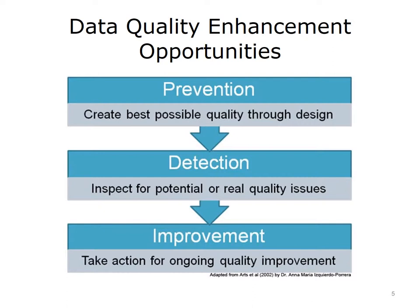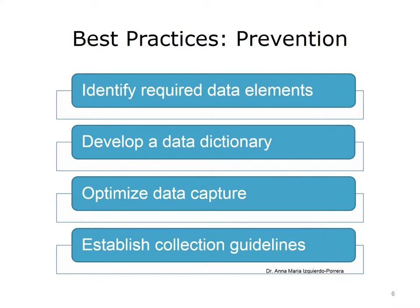You will implement activities to detect potential or real flaws that can pose threats to data quality, and you will take corrective actions to improve data quality. Let's recap what some of those activities include under each of the three areas. Identify the required data elements for the task. A data dictionary with standard definitions and data formats will be essential for promoting data quality.